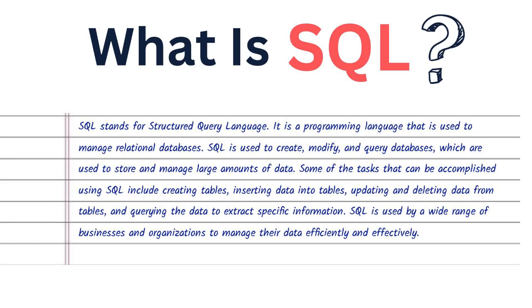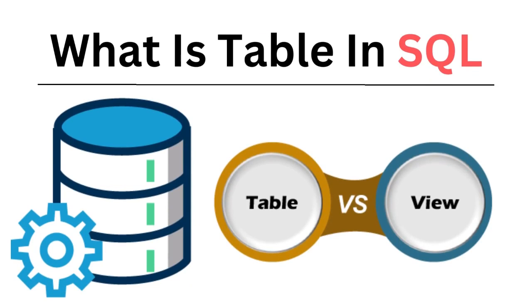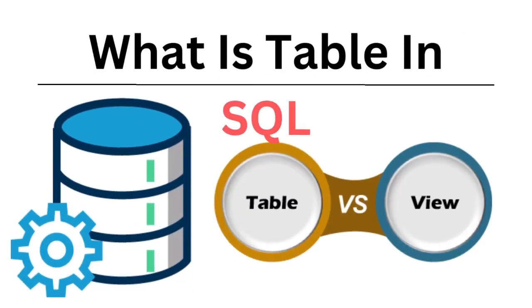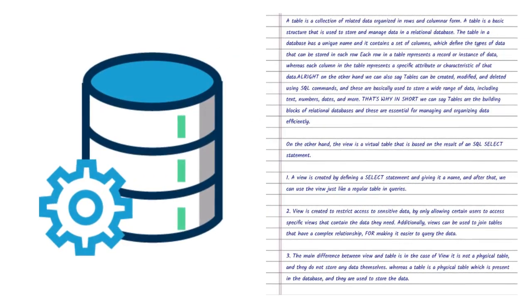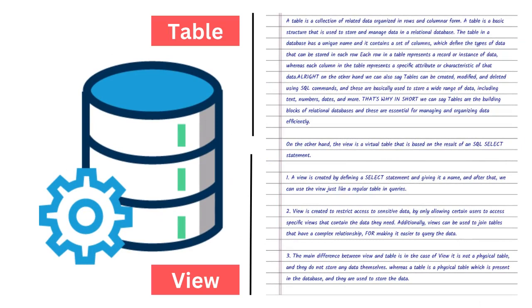The next question is: what is a table in SQL and how is it different from a view? In SQL, a table is a collection of related data organized in rows and columns, or we can say a table is the basic structure used to store and manage data in a relational database. Each table has a unique name and contains columns that define the type of data stored in each row. Each row represents a record, while each column represents a specific attribute of that data.